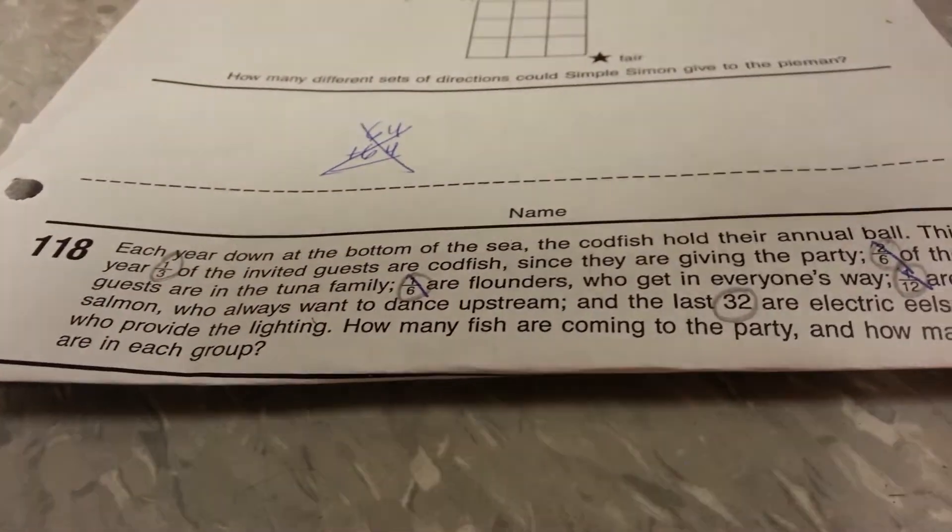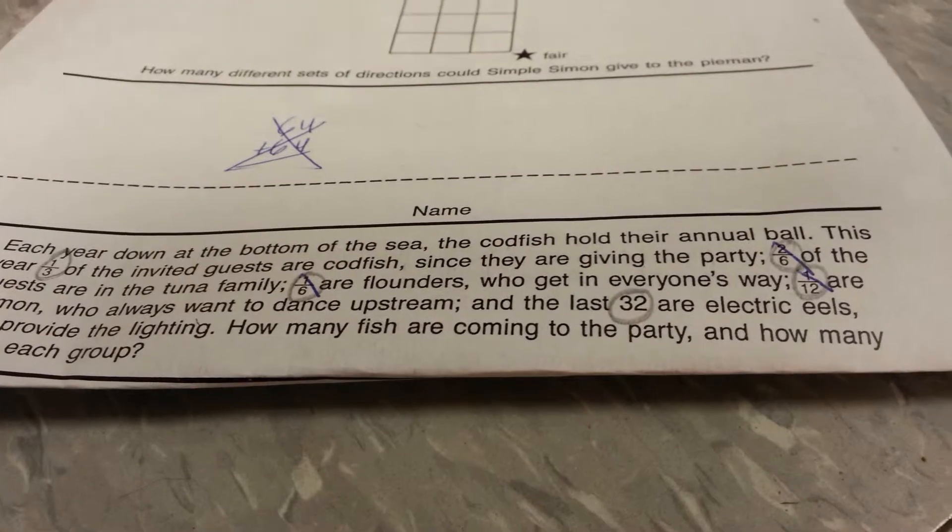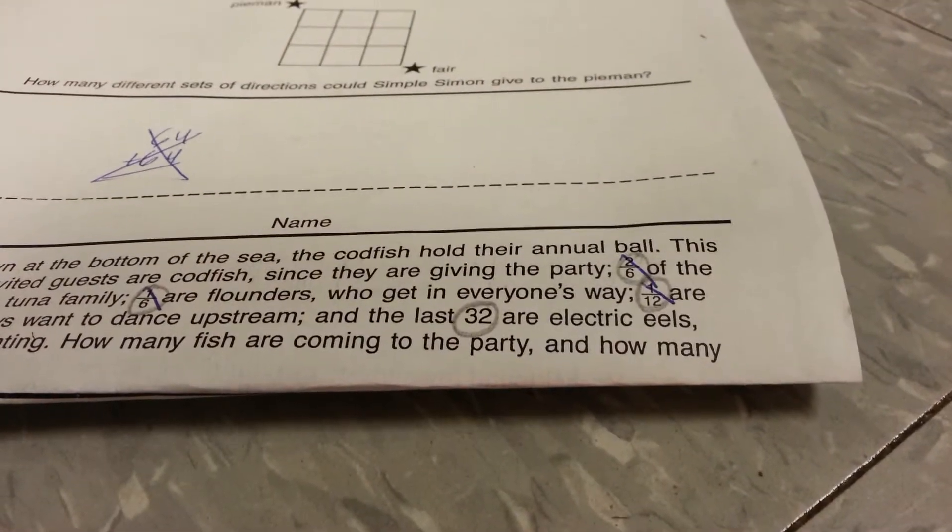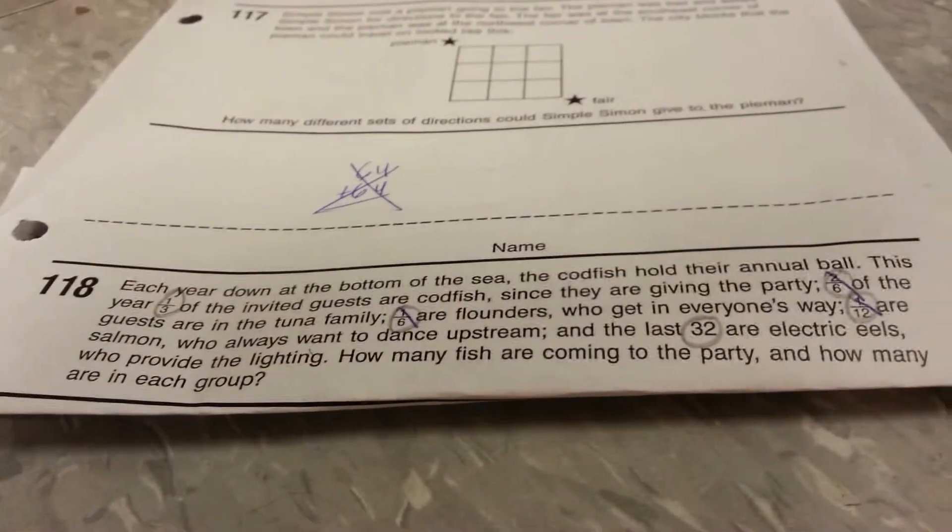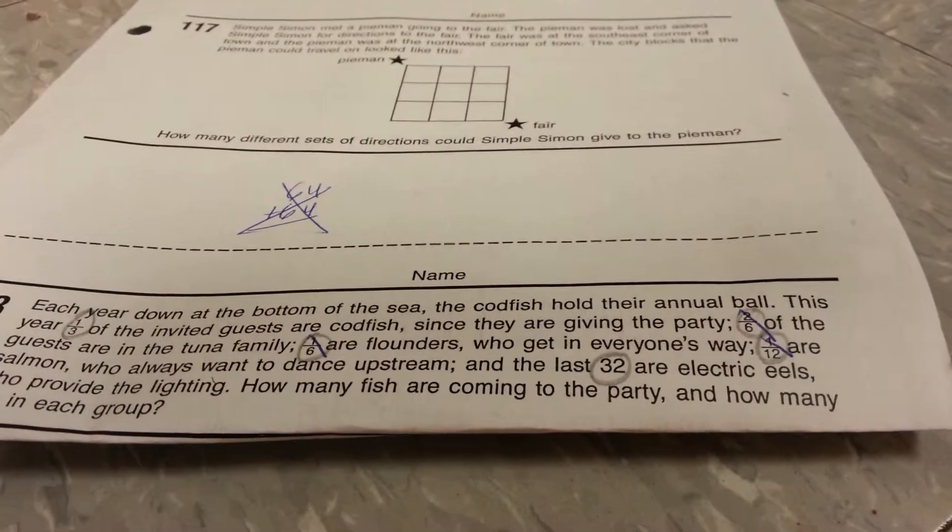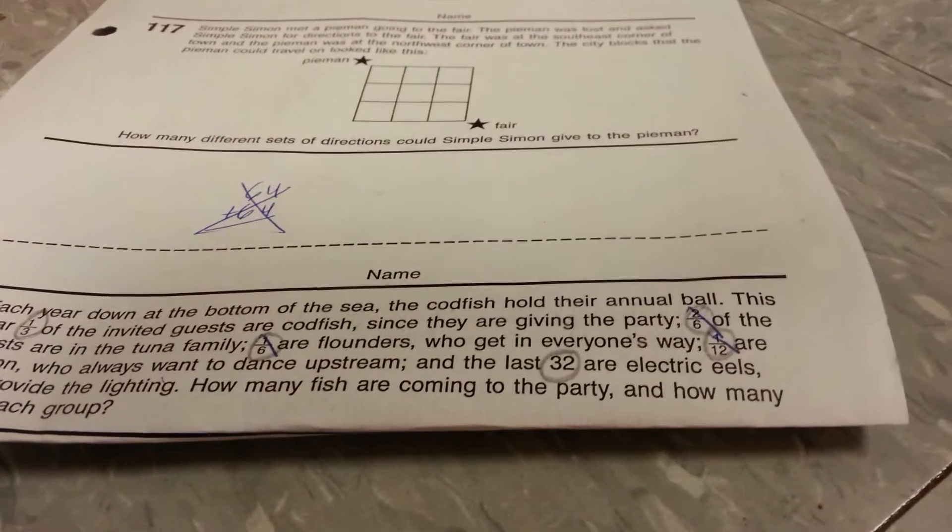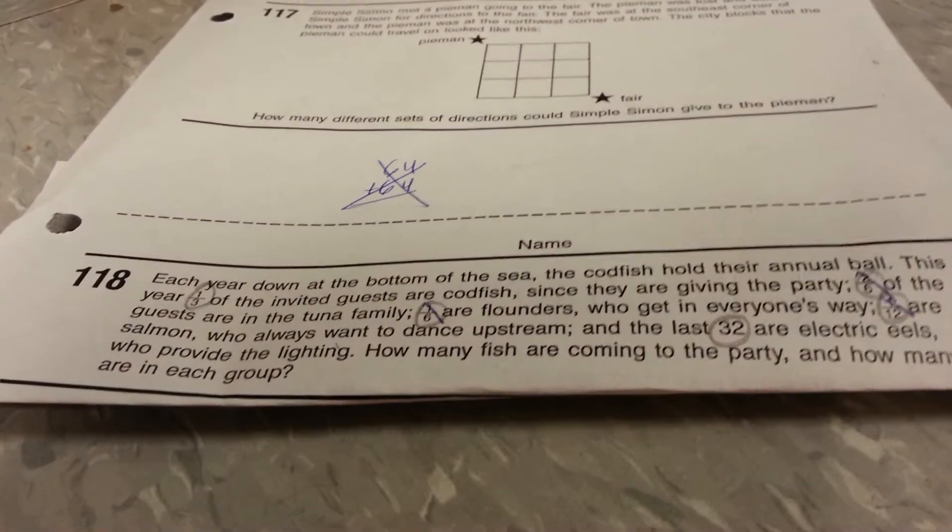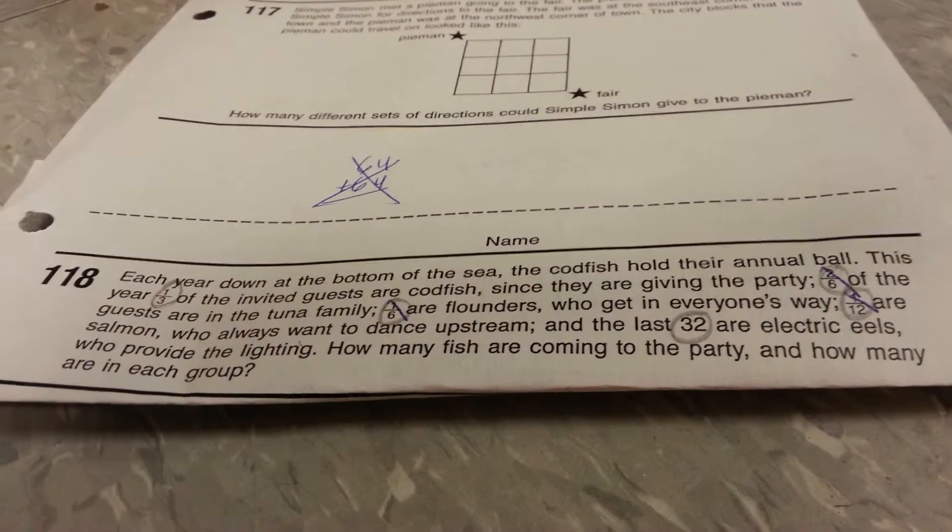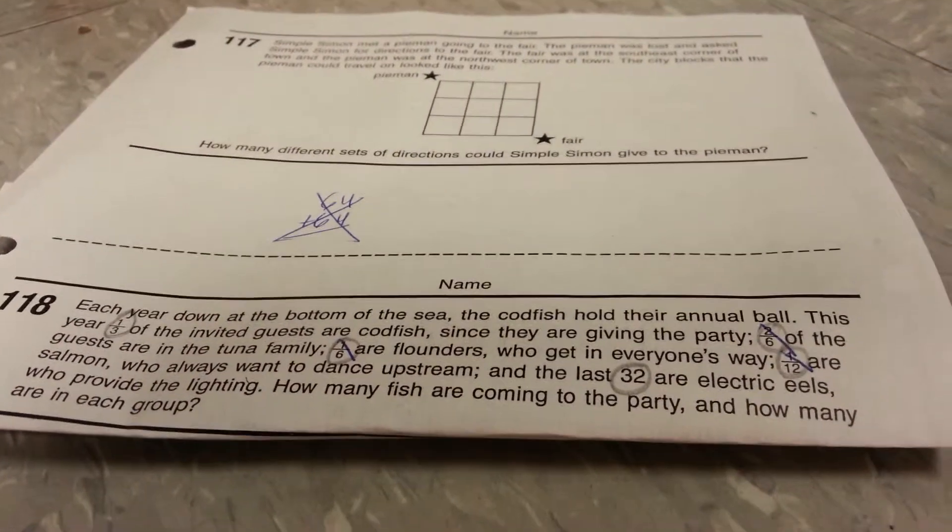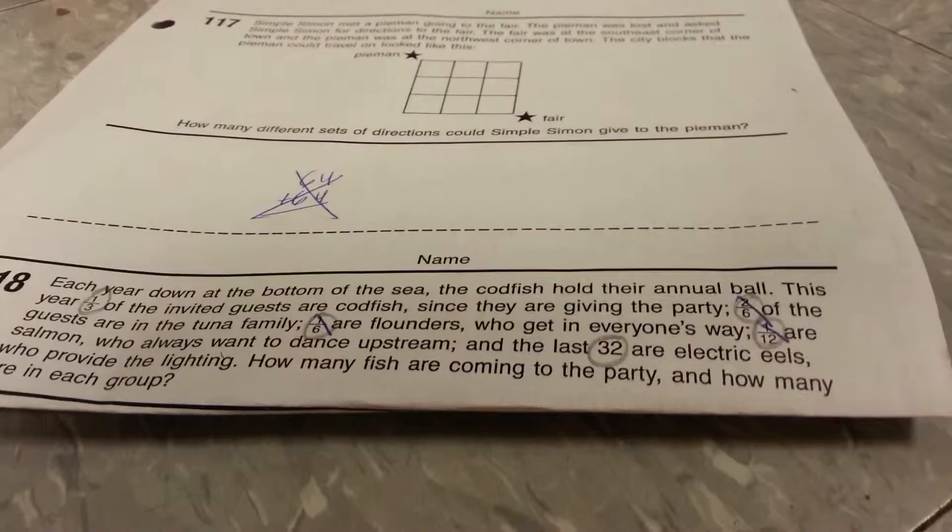One-sixth are flounders who get in everyone's way. One-twelfth are salmon who always want to dance upstream. And the last thirty-two are electric eels who provide the lightning. How many fish are coming? And how many are in each group?